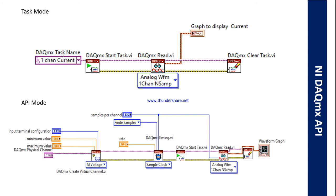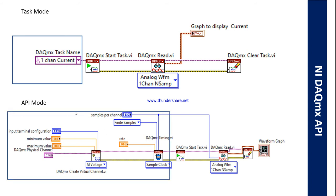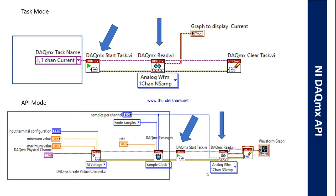For task mode, this is our initializing platform. For API mode, we need to write this longer code to initialize. After that initialization, we go to start task mode. In API mode, we'll configure according to our requirement and then start our task. After that, both modes are the same — one channel analog waveform, one channel analog sample — these are the same.